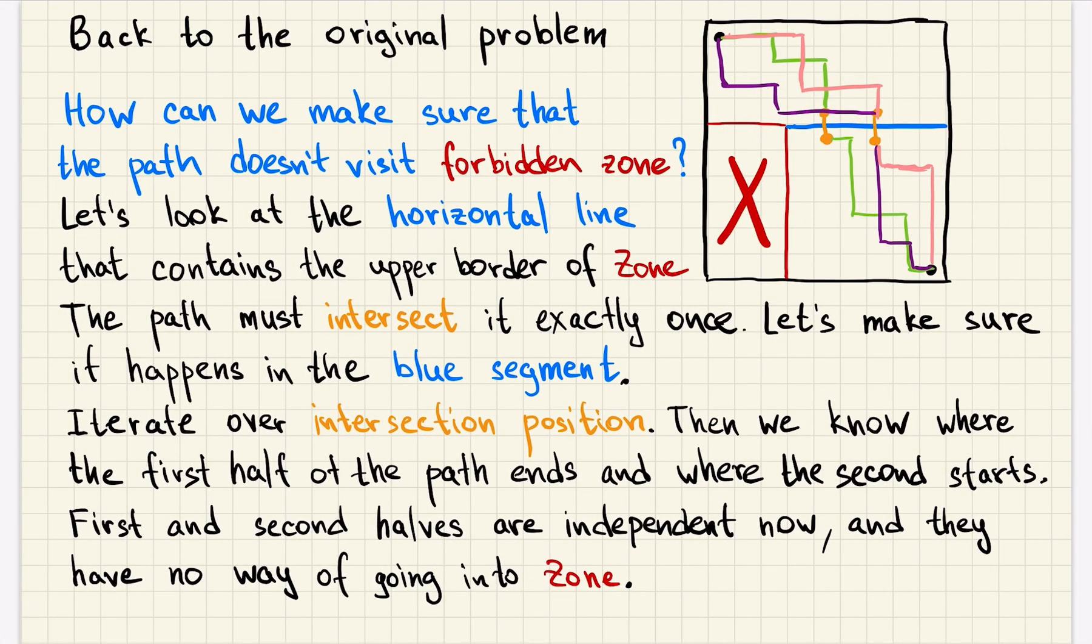Let's return to the original problem. How can we make sure that we don't visit the forbidden zone? Let's look at this horizontal line. Any valid path or like any path that goes only right or down must intersect this line. It cannot intersect it here because it will enter the forbidden zone, so we have to make sure that it intersected here in the blue segment.